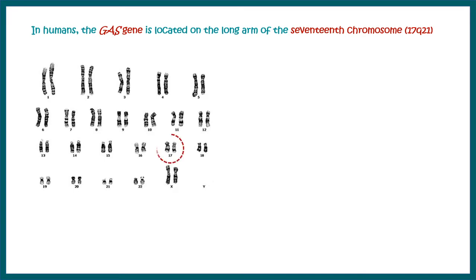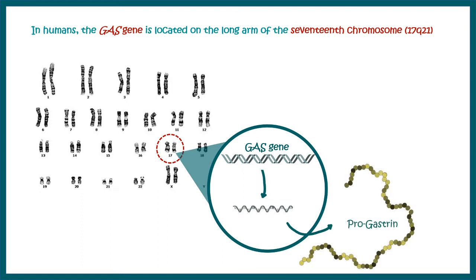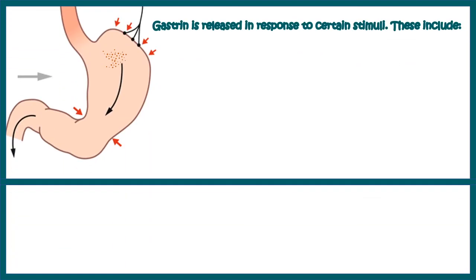Inside chromosome 17, the GAS gene is transcribed and translated into a precursor form of gastrin known as pro-gastrin. From pro-gastrin, post-translational modification leads to the production of big gastrin, mini gastrin, or little gastrin. Gastrin is released in response to certain stimuli, which we will now learn about.